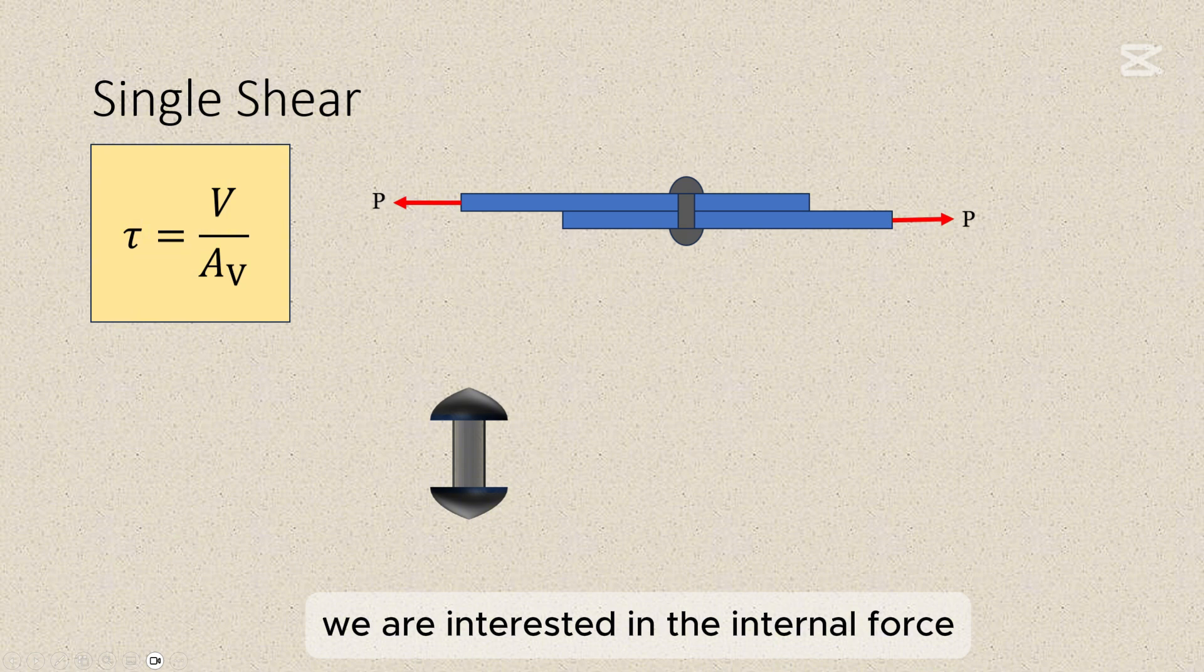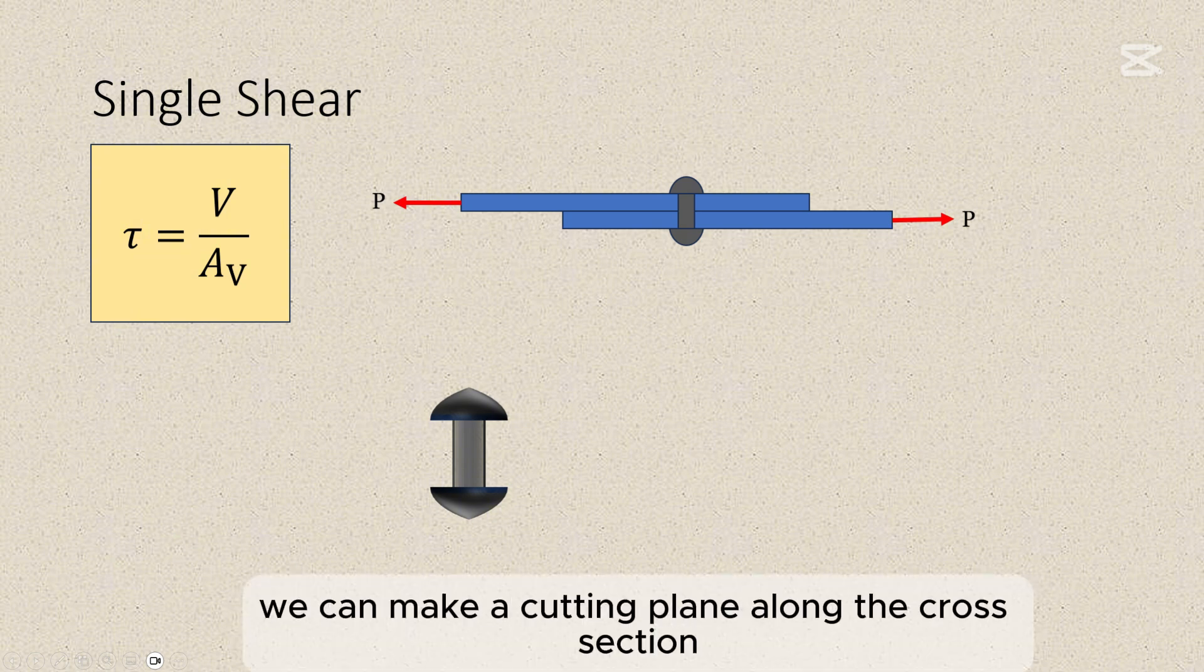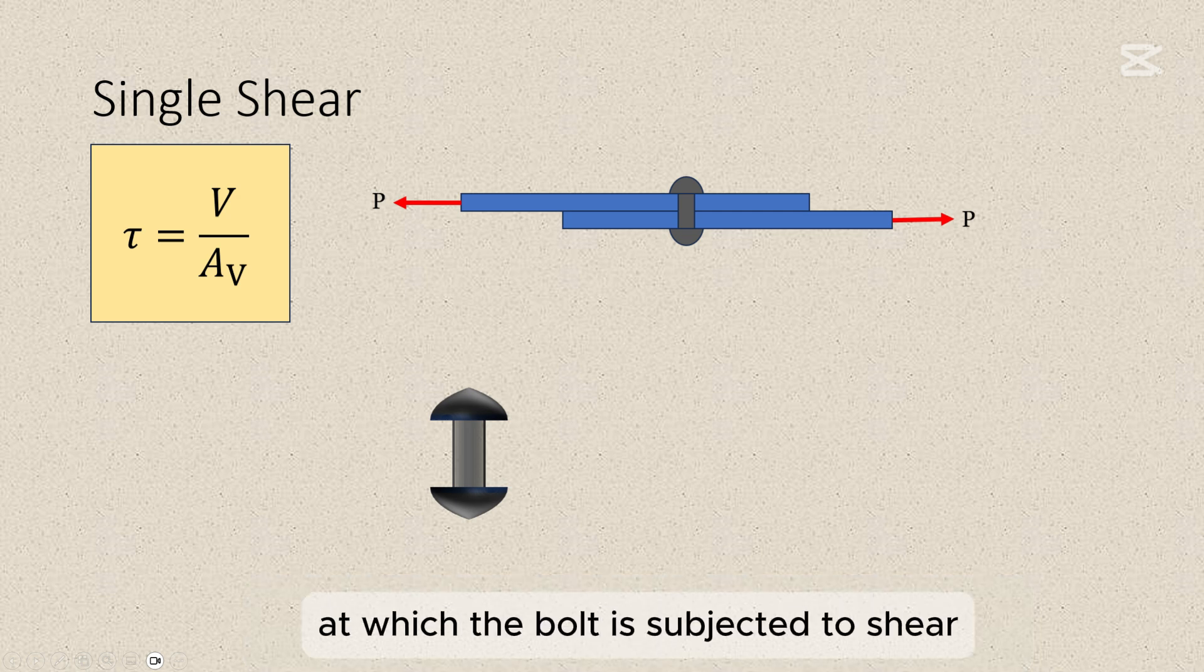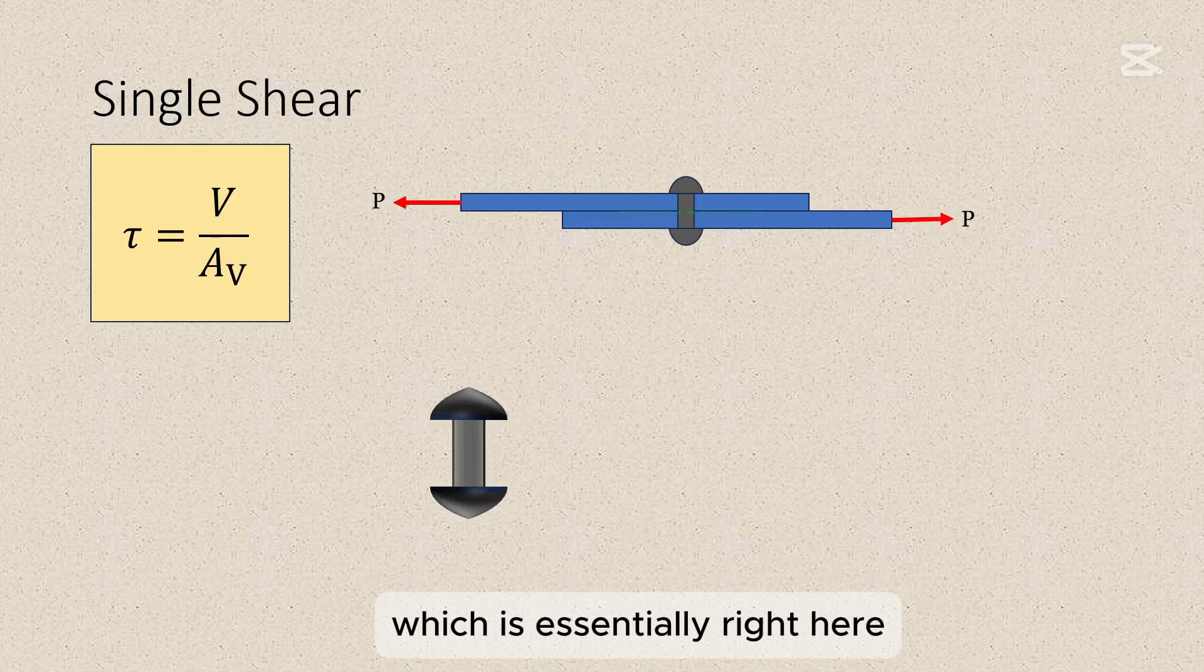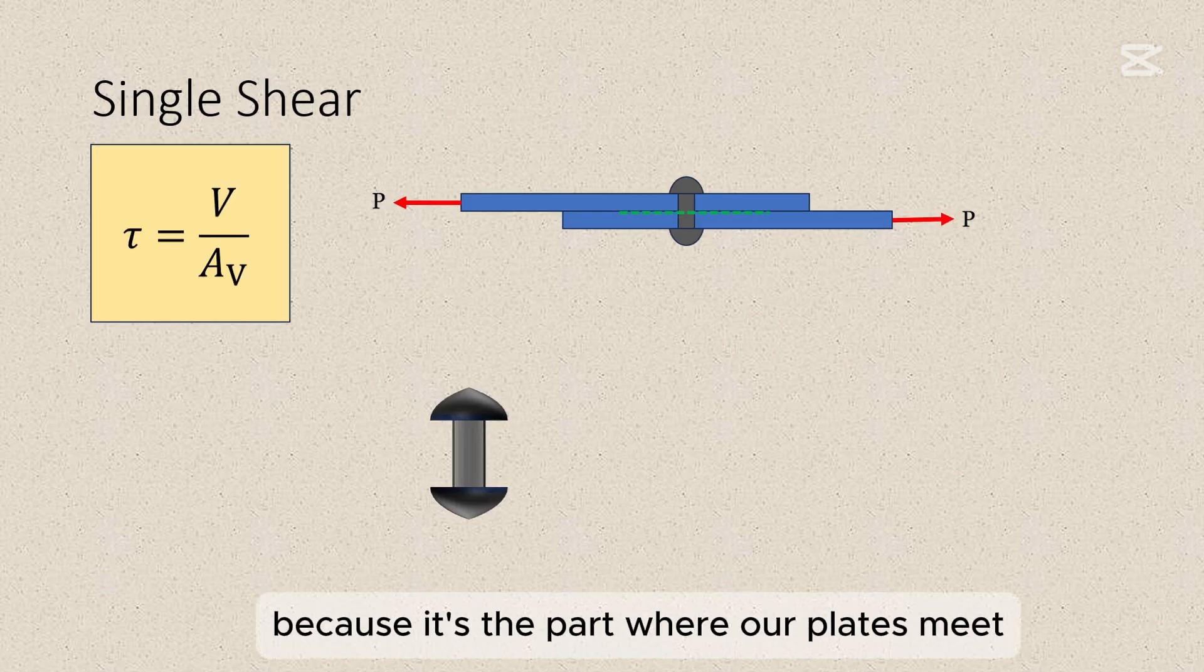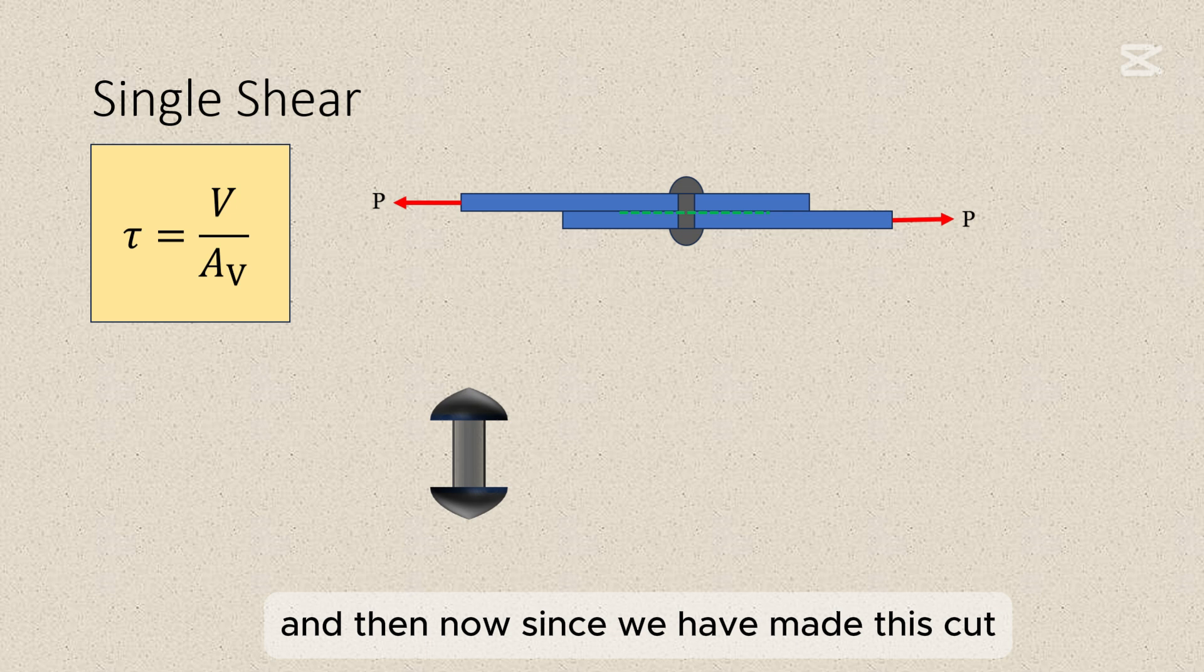Again, let's remember that in stresses, we are interested in the internal force and so to analyze the internal force in the bolt, we can make a cutting plane along the cross-section at which the bolt is subjected to shear, which is essentially right here. Because it's the part where our plates meet. And then now, since we have made this cut, let's try to isolate the bolt.